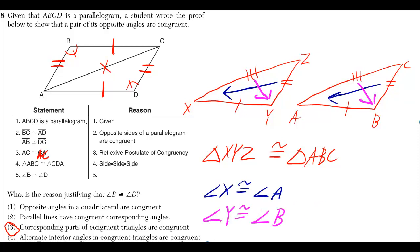Likewise, angle Y is congruent to angle B because they're both across from the triple mark. And angle Z is congruent to angle C because they're both across from the single mark.